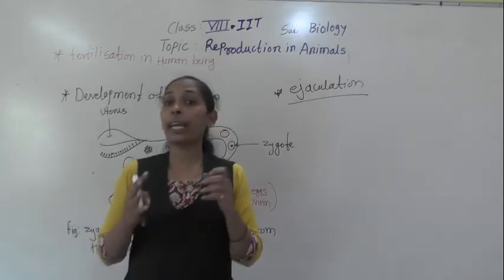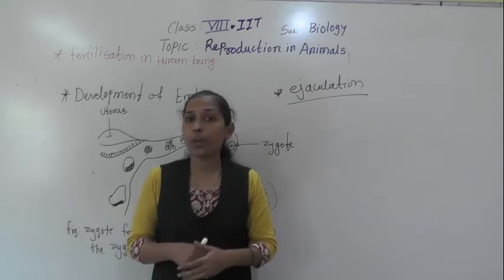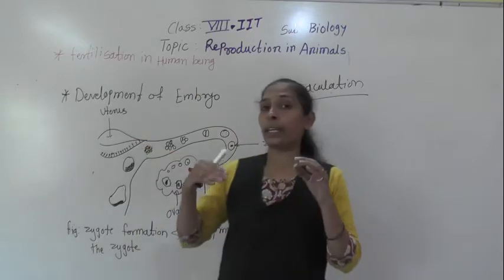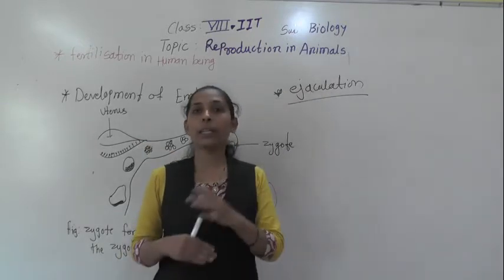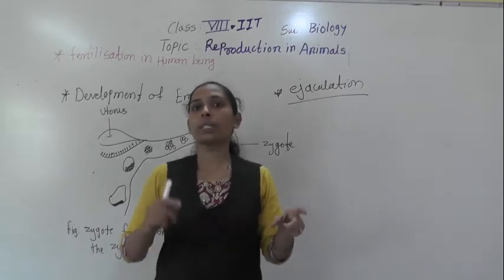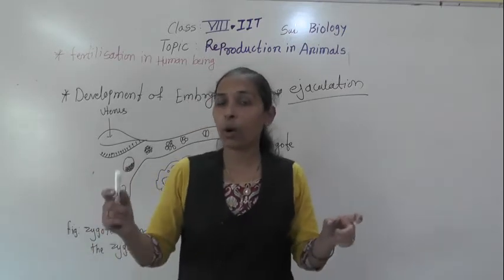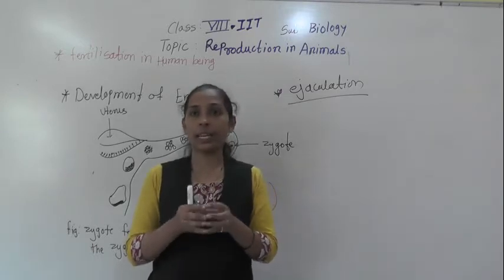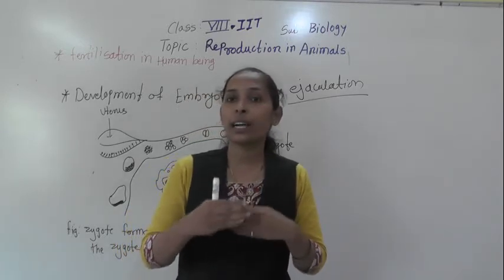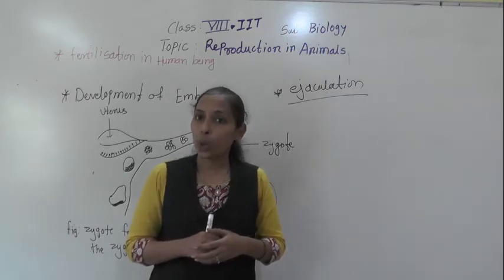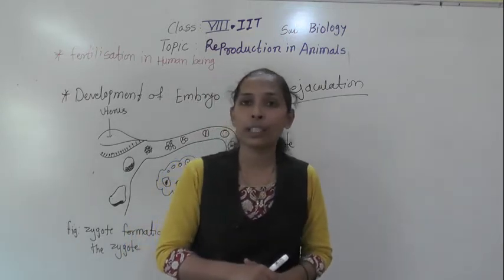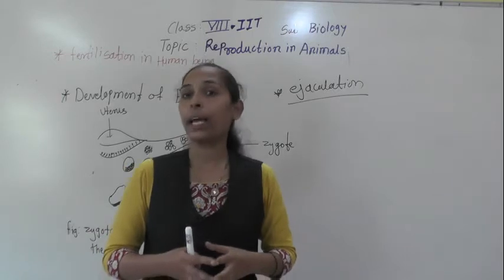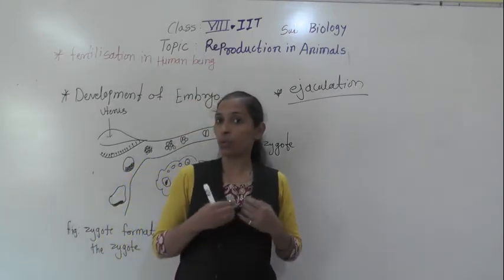Once ejaculation is done, the active and motile sperms are transferred to the fallopian tube through the uterus. Millions of sperms are there, but among those millions, only one sperm gets fused with the single egg or ovum. So the sperm and ovum get fertilized. Once fertilization is done, the fertilized egg starts to form protective layers on it, which prevents the entry of other sperms into the egg.